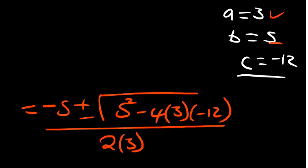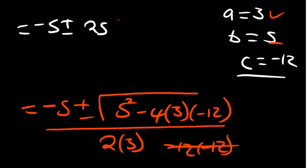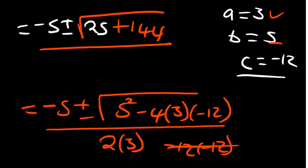So what we have is negative 5, plus or minus. So 5 squared is 25. 4 by 3 is 12. 12 by 12 is going to be 144. So it's actually negative 12 by negative 12, giving us a positive 144. So plus 144. The square root of that, divided by 6.